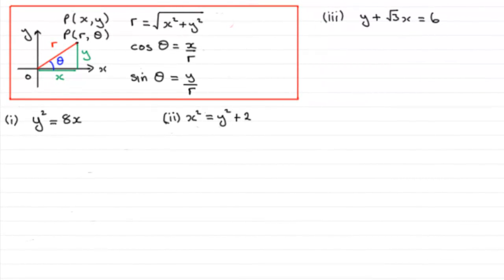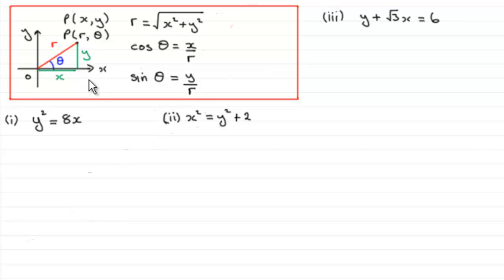Welcome to this tutorial where I'm going to show you how we can take a Cartesian equation of a curve and convert it to an equivalent polar form. To do this, let's backtrack on stuff we should already be familiar with. If we have a point P with Cartesian coordinates x, y, that point can be converted to polar coordinates r, theta.